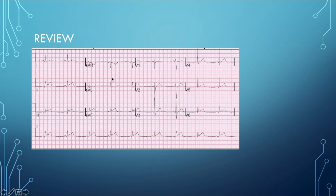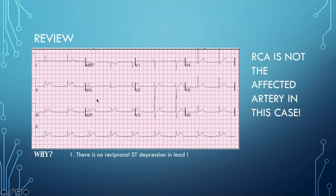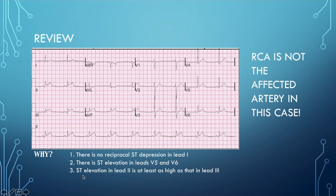For a quick review, here's the 12-lead without any markings. You can see ST elevations in leads 2, 3, and AVF — it's an inferior infarct, but in this case the RCA is not the affected artery. Why not? Number one, there's no reciprocal ST depression in lead 1. Two, there are ST elevations in leads 5 and 6 as well. And three, ST elevation in lead 2 is at least as high as that in lead 3 — they're about the same height. These three criteria are highly correlated with a circumflex occlusion.